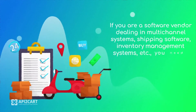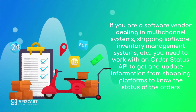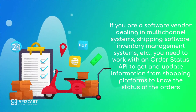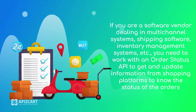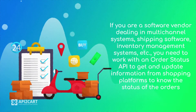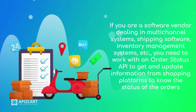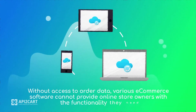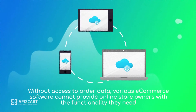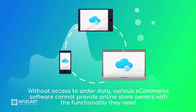If you are a software vendor dealing in multi-channel systems, shipping software, inventory management systems, etc., you need to work with an order status API to get updated information from shopping platforms to know the status of the orders. Without access to order data, various e-commerce software cannot provide online store owners with the functionality they need.